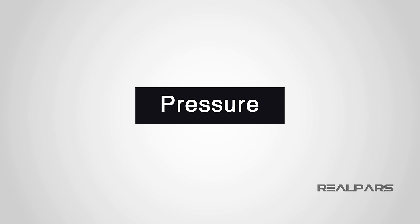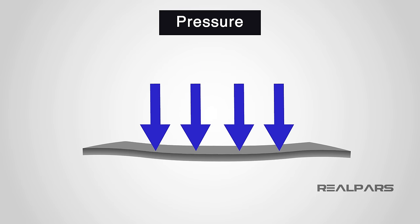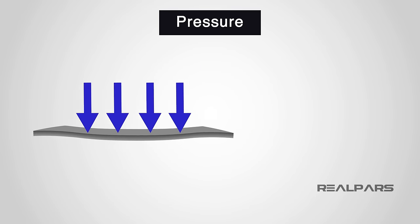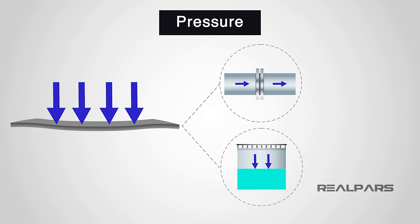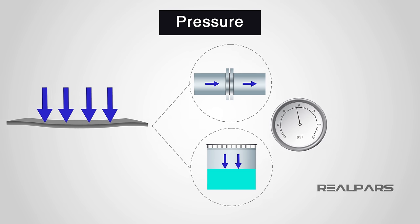To understand how a differential pressure transmitter works, we need to know some principles of pressure. Pressure is the result of force applied onto a unit of area. In the case of fluid and gas, this area would be the inside of a pipe, tank, vessel, or other sealed housing. Since pressure is a physical quantity, it can be measured.